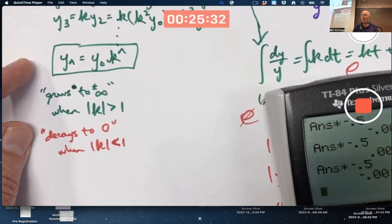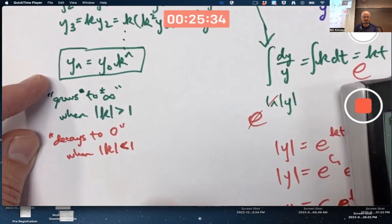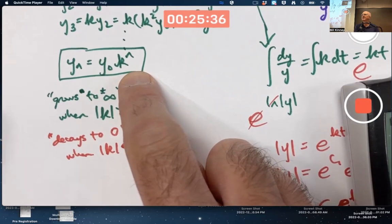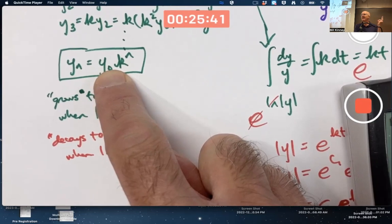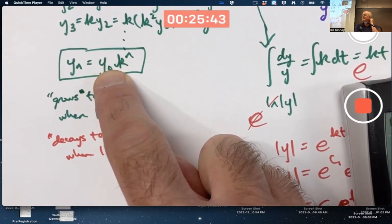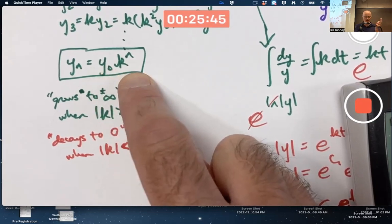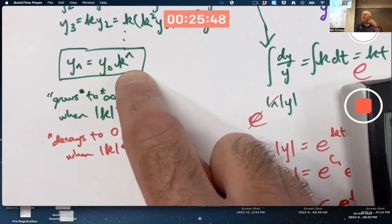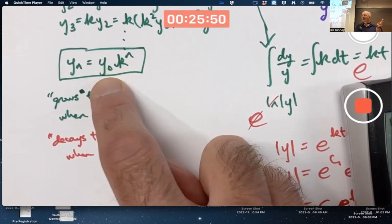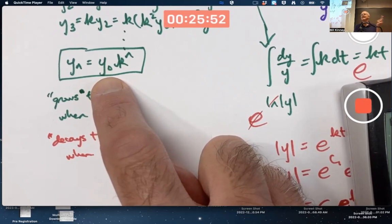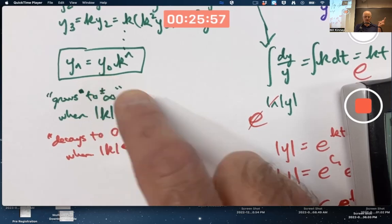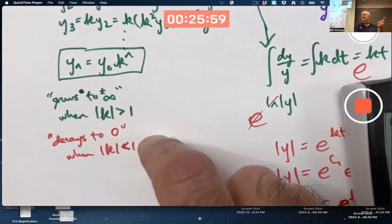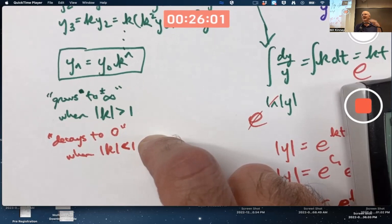What if the absolute value of k is one, like one or negative one? If k is one, one of the n is always one. You always get the initial condition. It's constant. If k is negative one, that number is going to oscillate between one and negative one. The y n is going to oscillate between y not and negative y not. So that's neither growing nor decaying. Constant when k is one, oscillating without growing or decaying when k is negative one.